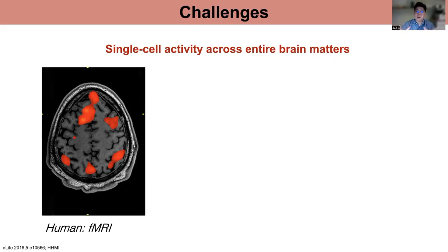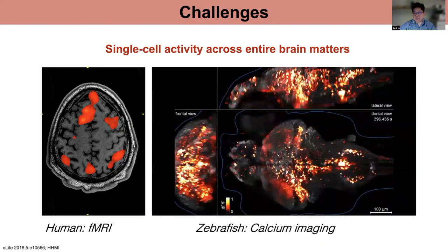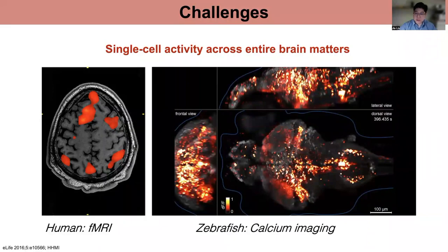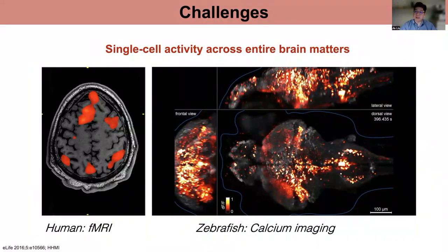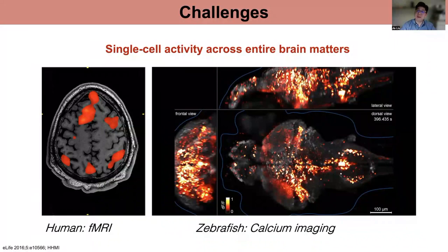This is another example — calcium imaging of a zebrafish, where each individual red dot labels a neuron that is firing. You can see that the fish recruits neurons across its entire 3D brain volume to collectively define its brain behavior state.